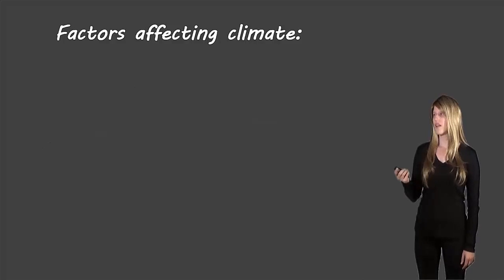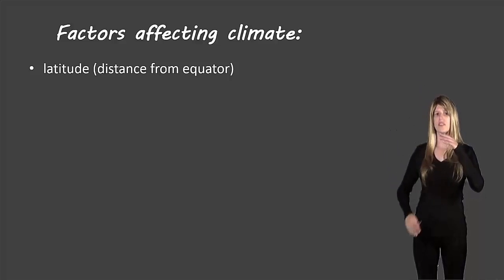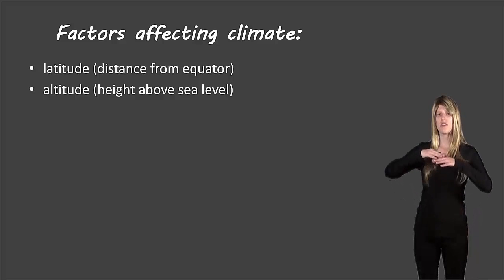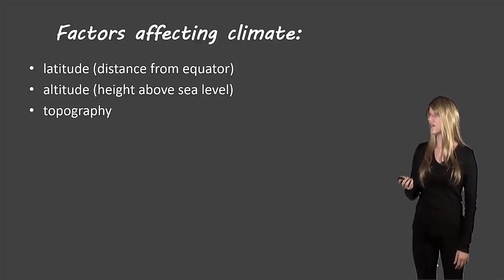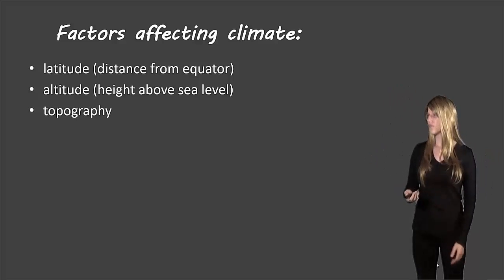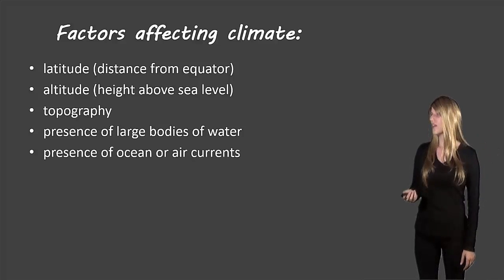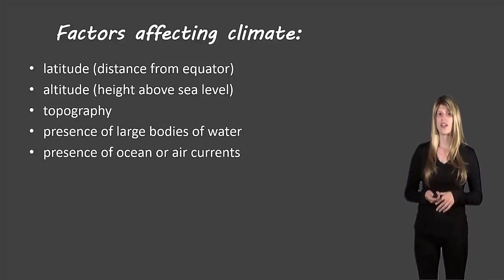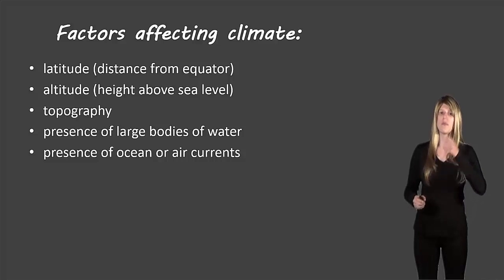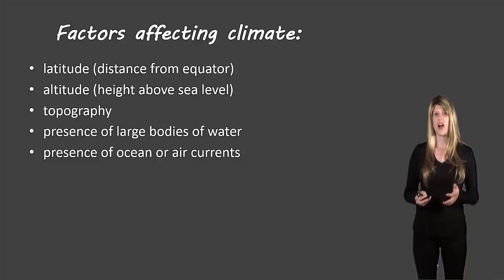There are a few different factors that affect climate. The first is latitude — that's how far a location is from the equator, either north or south. Altitude is how high something is above sea level, whether it's near the sea or at the top of a mountain. Topography has to do with whether the land is very flat or has mountains. Then there's the presence of large bodies of water — whether it's near an ocean or landlocked — and the presence of ocean and air currents, which we've already covered in another video linked in the description below.